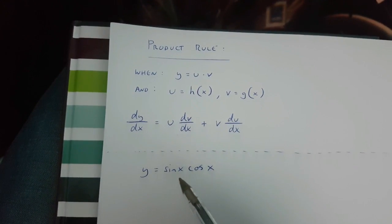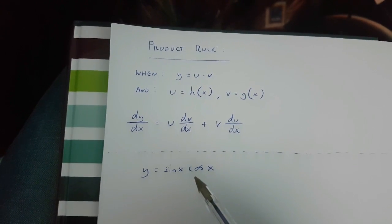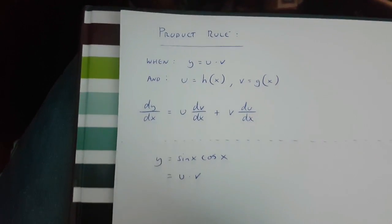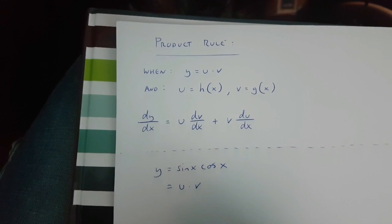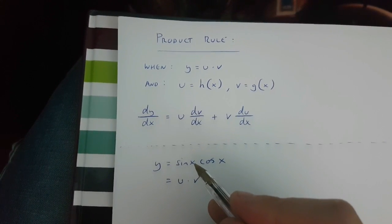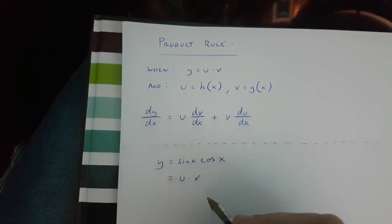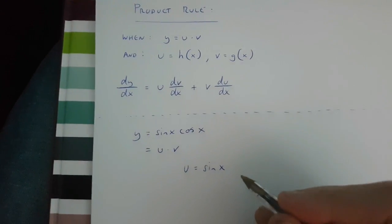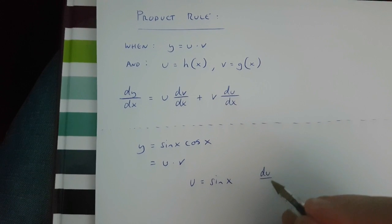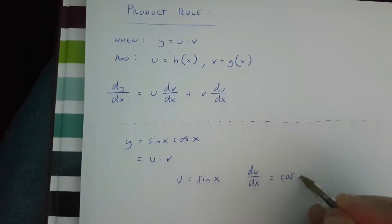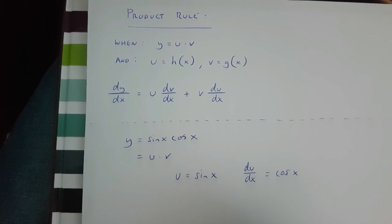Now, to begin with, I'm going to transform this into u times v. In this case, u is sine x and v is cos x. If u is sine x, then du over dx is going to be equal to cos x.